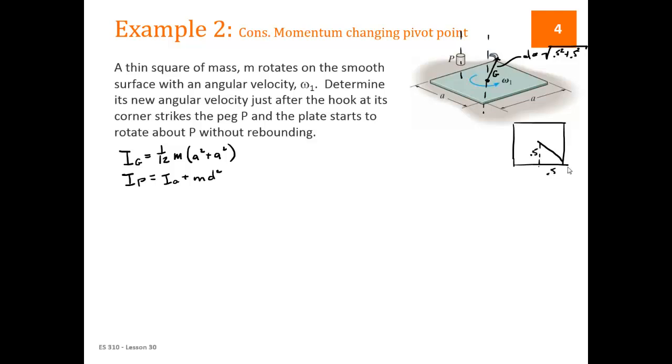And then we have IP, which is Ig plus mass times the distance squared, where the distance goes from G to P. So here's G and the P is at the corner. So this distance, D, is equal to the square root of 0.5 squared plus 0.5 squared. So if we look at our square here, we're looking for this distance.